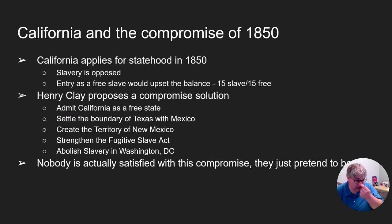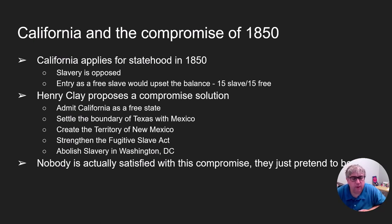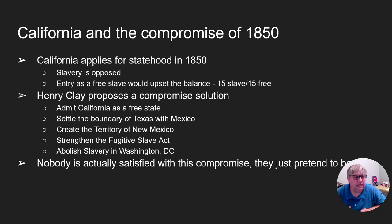Henry Clay — the same one who came up with the Missouri Compromise of 1820 and the American System after the War of 1812 — is still around. He's very old by this point, and he comes up with a new compromise. California comes in as a free state, but a new territory of New Mexico is created where the people will vote on slavery. Slavery will be abolished in Washington, D.C. So both sides are getting something.